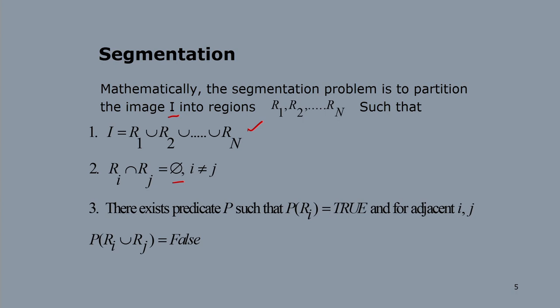For determining homogeneity, I am considering a measure called the predicate. The predicate of a homogeneous region is true. If I consider two adjacent regions ri and rj, the predicate of ri union rj will be false because it is not homogeneous. So for the homogeneous region the predicate is true, and for a non-homogeneous region the predicate is false. Based on the predicate, I can decide whether a particular region is homogeneous or not.